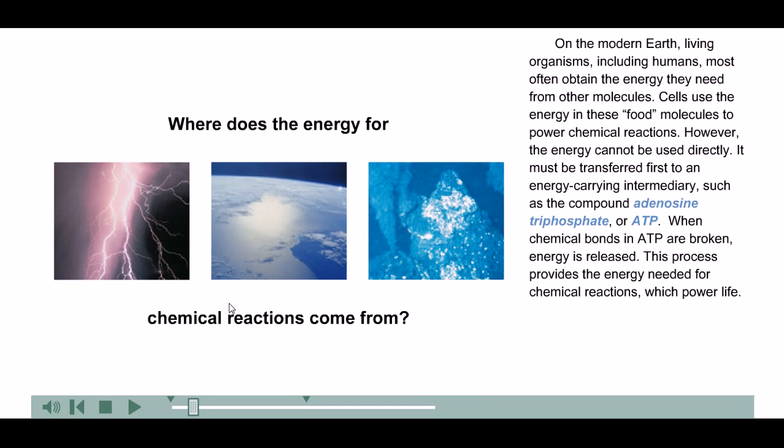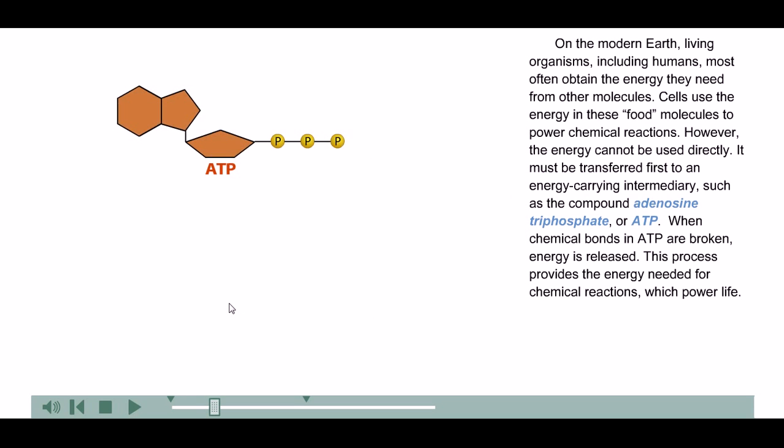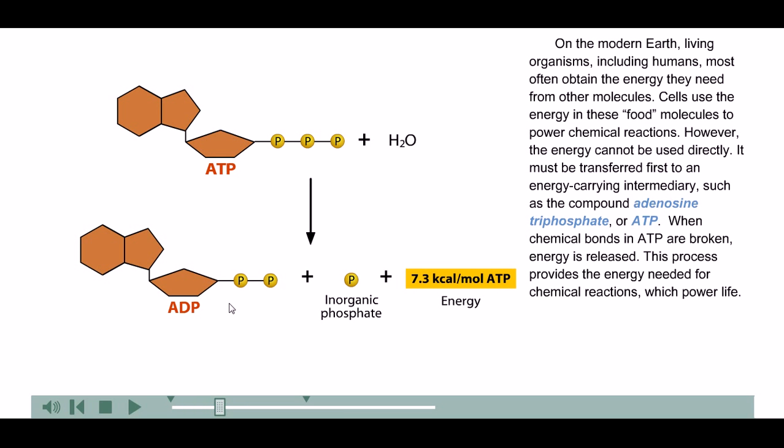On the modern Earth, living organisms, including humans, most often obtain the energy they need from other molecules. Cells use the energy in these food molecules to power chemical reactions. However, the energy cannot be used directly. It must be transferred first to an energy-carrying intermediary, such as the compound adenosine triphosphate, or ATP. When chemical bonds in ATP are broken, energy is released. This process provides the energy needed for chemical reactions, which power life.